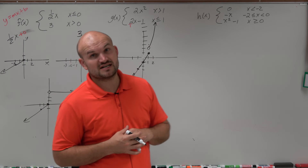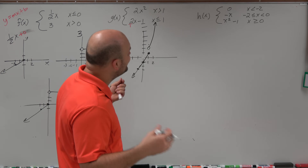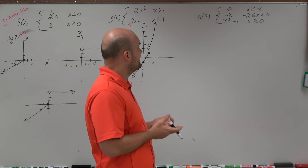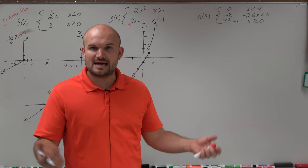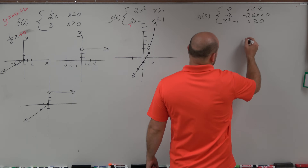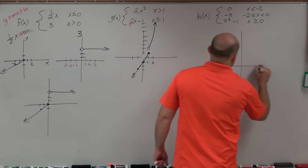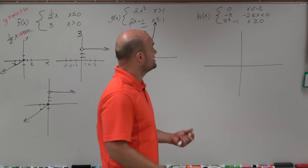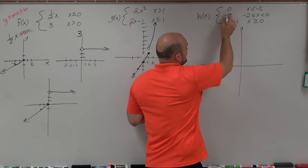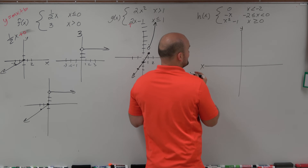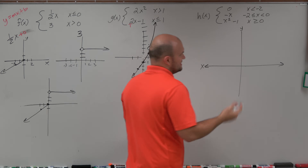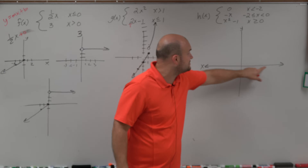Last but not least, we have h of x, which is comprised of three different functions. The same exact thing applies — I'm going to graph each one separately on the same graph, and then erase based on their constraints. The first constraint is kind of hard to see because it's 0. If the output is 0, that means it's on the x-axis — so that's a little bit hard to see because it is on the axis.